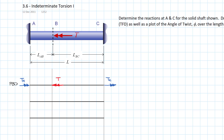Because we're using superposition, we break the system into a primary and a secondary system — removing one reaction to let the structure deform freely, then adding it back as an applied force. I'll choose to remove the reaction at C. In the primary system we keep the reaction T_A' at A and add the applied torque T at B, but we do not apply any reaction at C since we've freed it up.